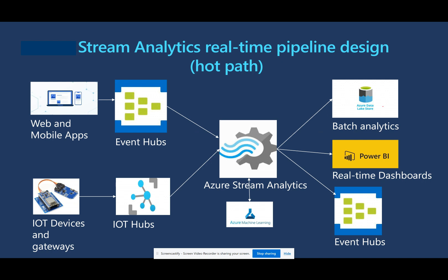There are various output modes. We can write the output to Azure Data Lake Storage for archival, and from there perform batch analytics. Or we can write the output to the Cosmos database for an operational data store. Or we can directly connect to Power BI to publish real-time dashboards. Or we can write output to another Event Hub, which will trigger either an Azure Function or Azure Logic App to process a sequence of workflow steps.